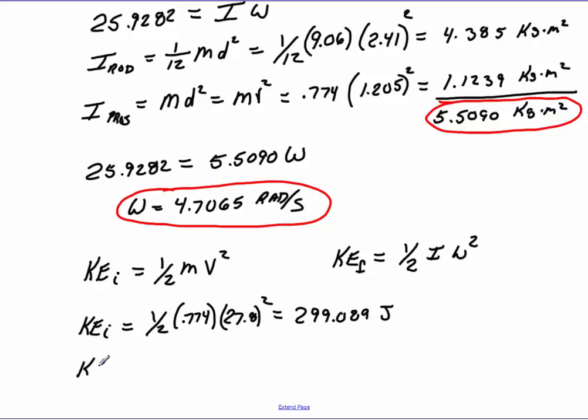We'll do our final kinetic energy. We'll do 1/2, we use the moment of inertia that we've got up here, 5.5090, times our angular velocity, which is going to be 4.7065. We will square that value right there. So 0.5 times 5.5090 times 4.7065 squared gives me a value of 61.02 joules.